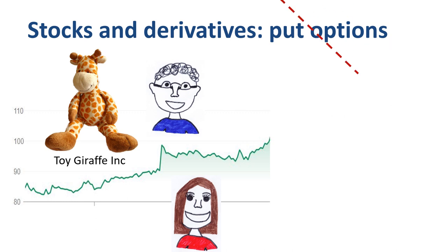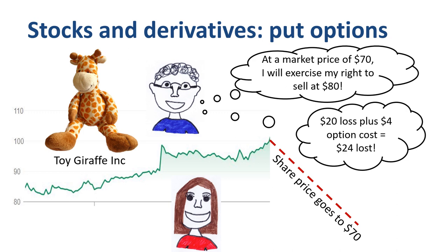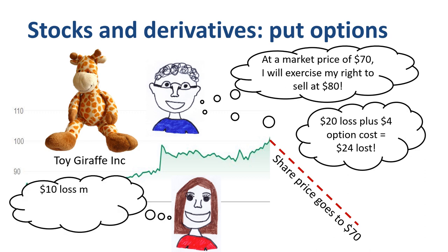If the share price goes down to $70, then John will exercise his put option, as it gives him the right to sell shares to Jane at $80, while in the open market he can sell them for only $70. John faces a loss of $24 per share in total: he lost $20 when the share dropped from $100 to $80, plus paid the cost of $4 for the option. His loss is capped, limited at $24 per share, and he does not get hurt by a further decrease of the share price. Jane loses $6 per share — $10 from the share dropping from $80 to $70, minus the $4 income she made when she sold the put option.